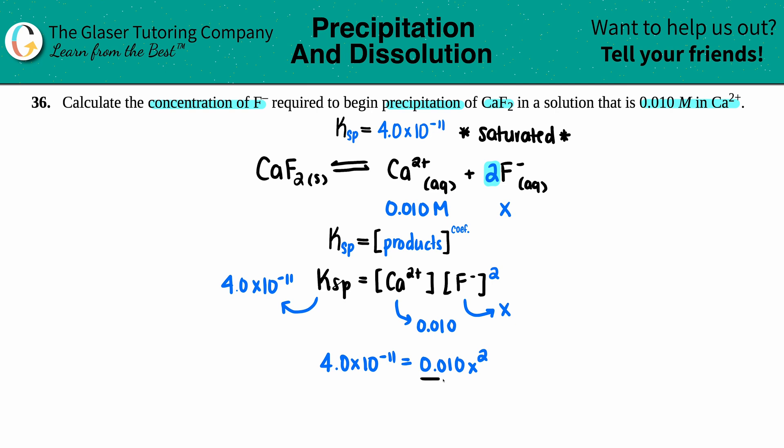Let's divide by 0.010. This gets rid of this 0.010, so 4 times 10 to the negative 11th divided by 0.01—I get 4.0 times 10 to the negative 9th equals x squared.